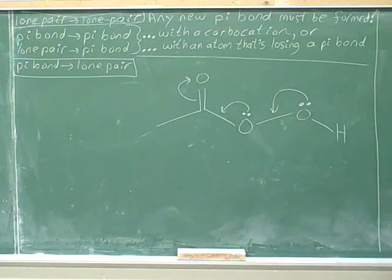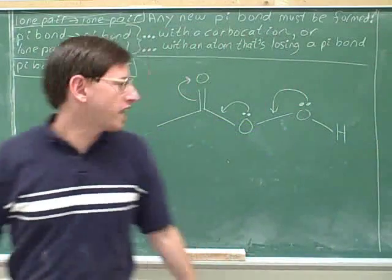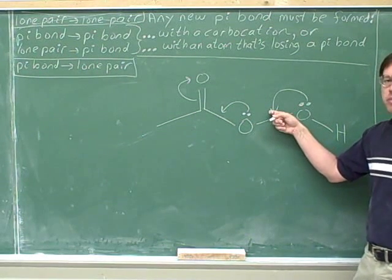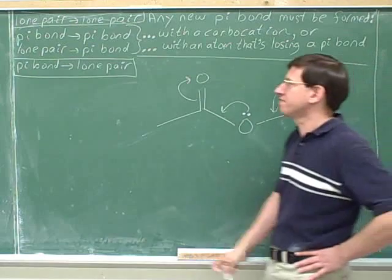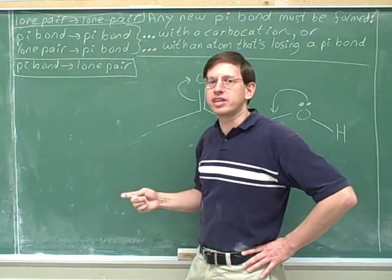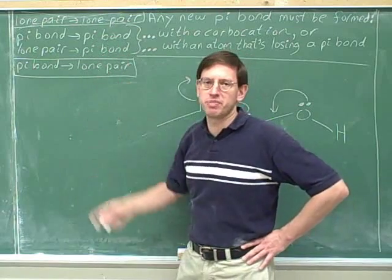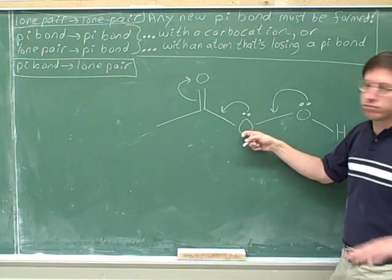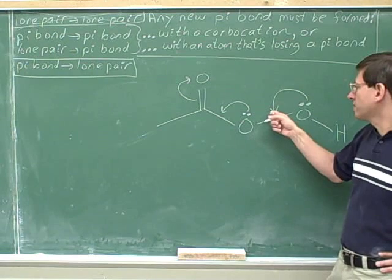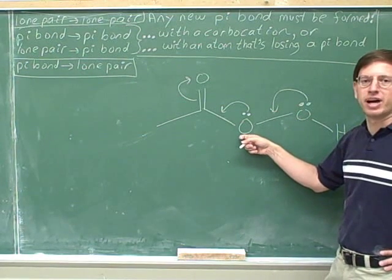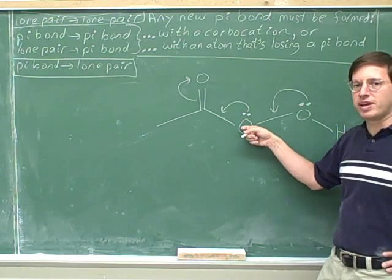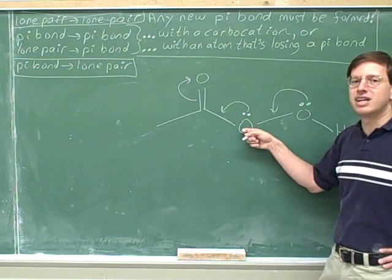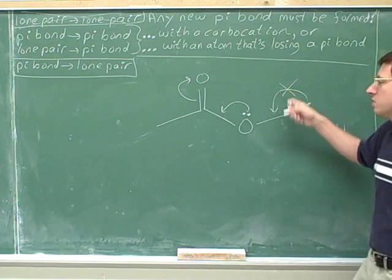Are these arrows valid? Let's start over here. This head indicates that we are forming a pi bond — that's when we have to be careful. We don't need to worry about exceeding an octet when we form a lone pair, but when we're forming a pi bond, we have to be careful. Are we forming a pi bond with a carbocation here? No. So the only way we can form this pi bond is if this atom is also losing a pi bond. But you can see that this oxygen is not losing a pi bond, so this arrow is illegal.